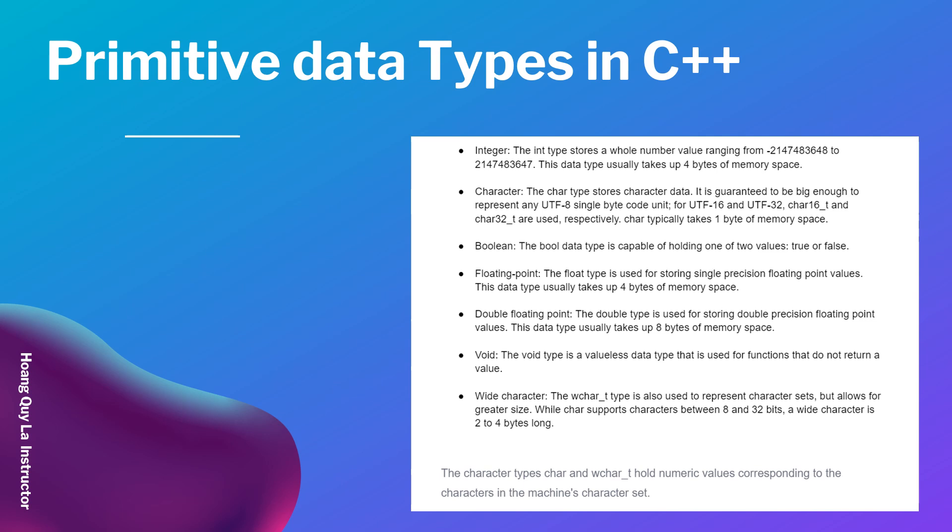The next one is boolean, which is true or false. The boolean data type is capable of holding one of two values: true or false. Floating point — the float type is used for storing single-precision floating-point values, such as 3.4, and it takes four bytes of memory space.